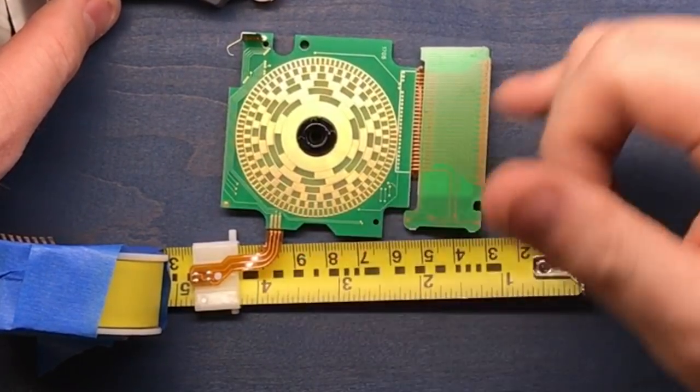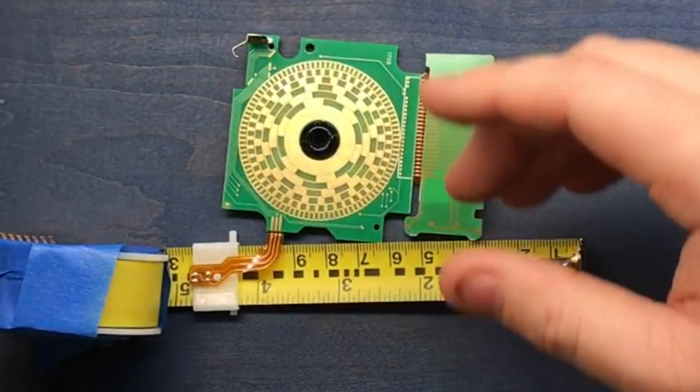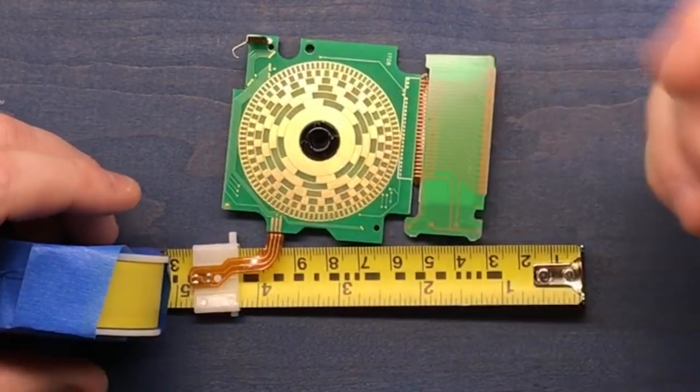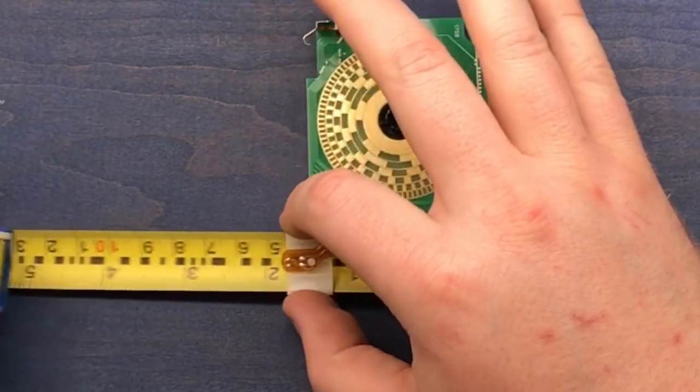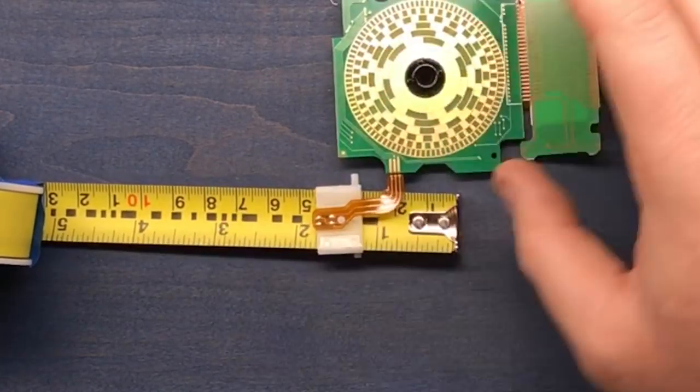And the magnetic strip here is going to have a more accurate reading. If you've got some grease on your fingers, it's not going to affect the magnetic encoder, so that's pretty cool.